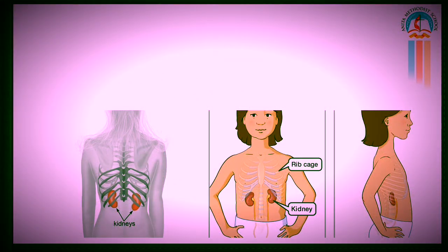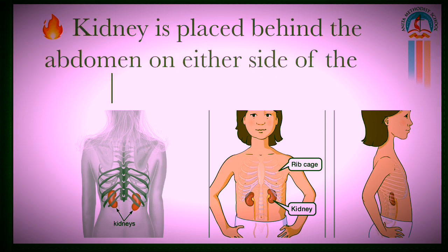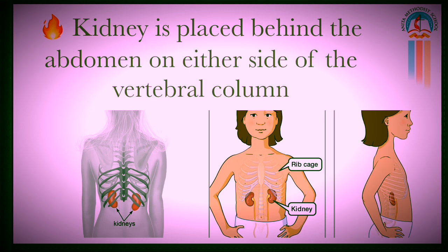Next, we are going to see the structure where the kidney is located. Do you know where the kidney is located? The kidney is placed behind the abdomen on either side of the vertebral column. Can you see the picture?